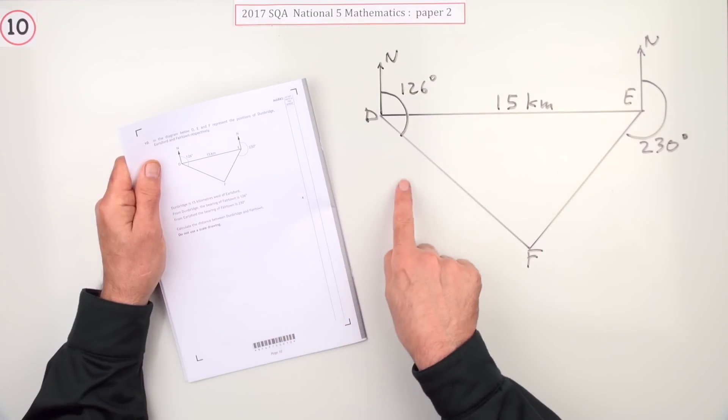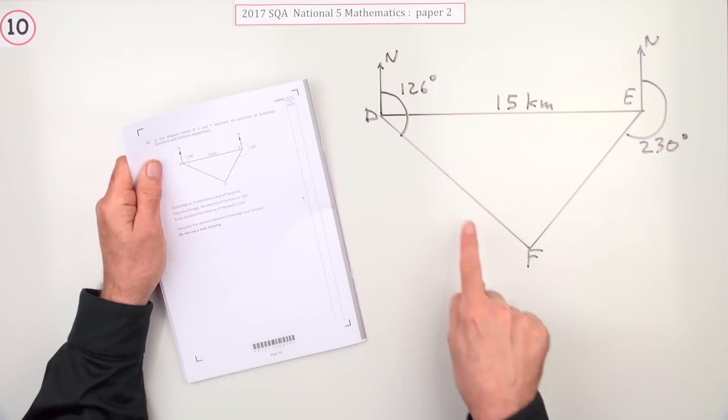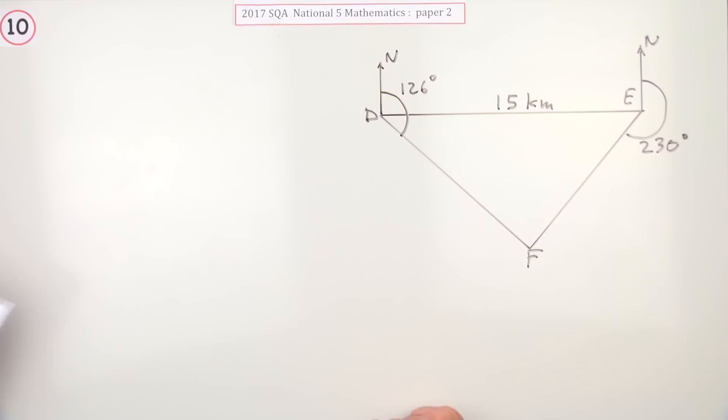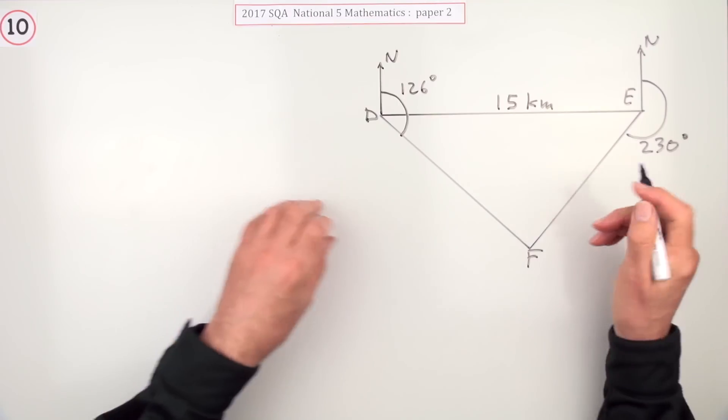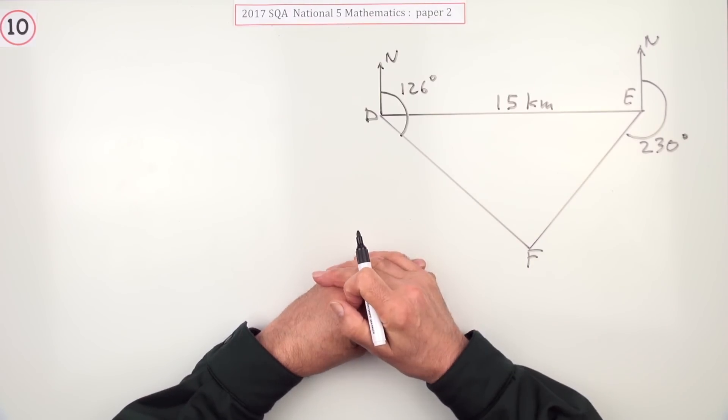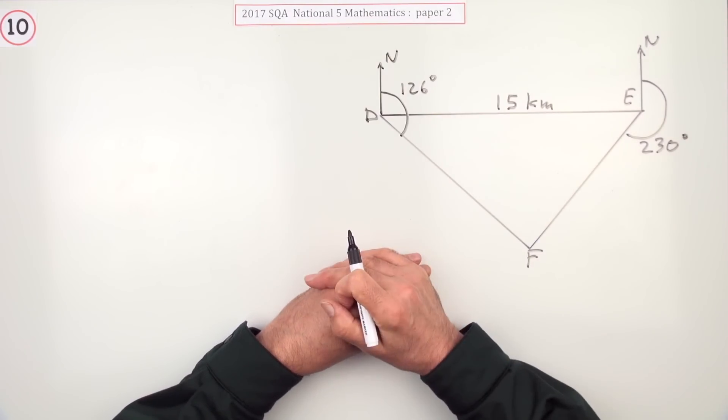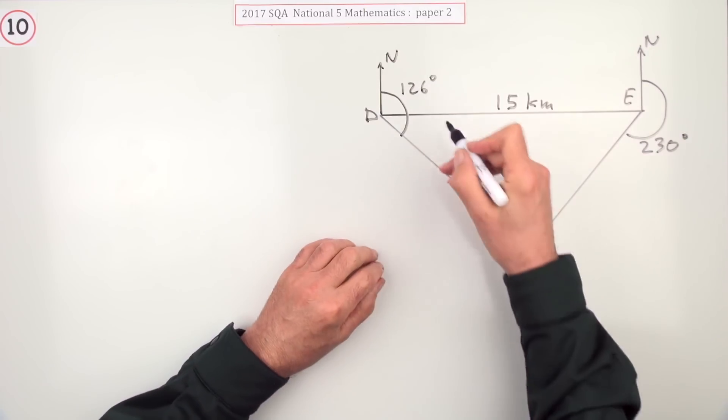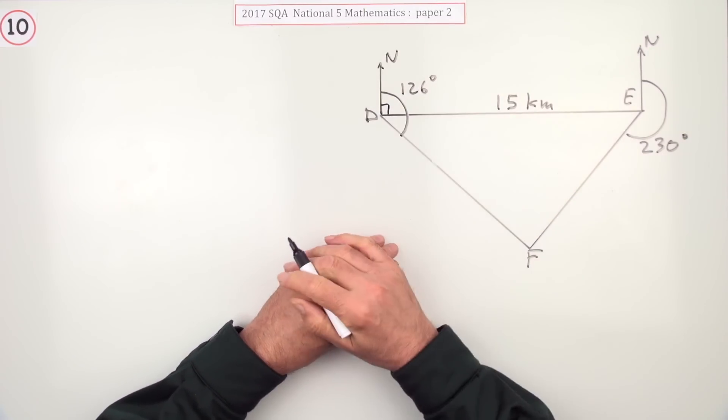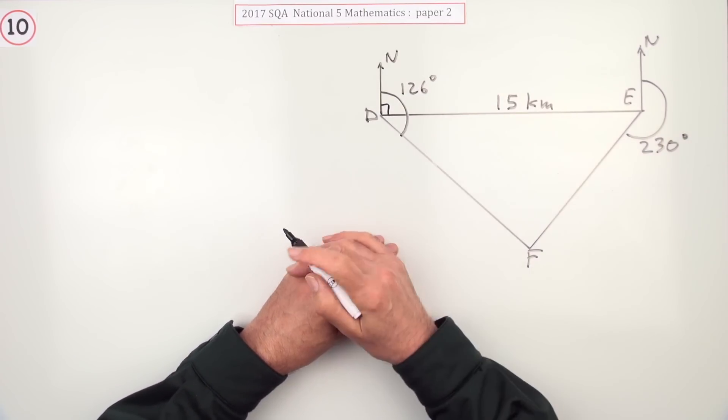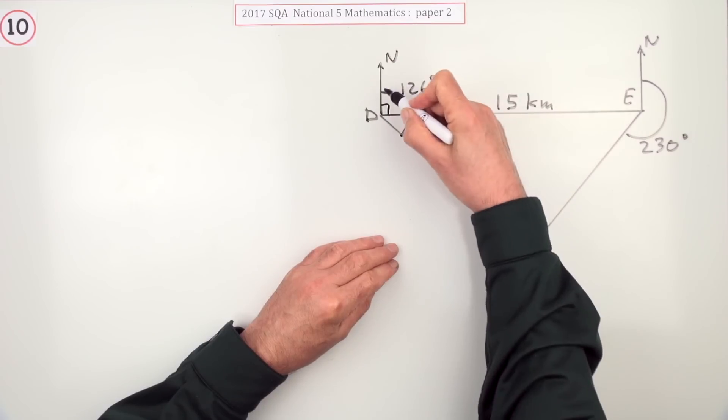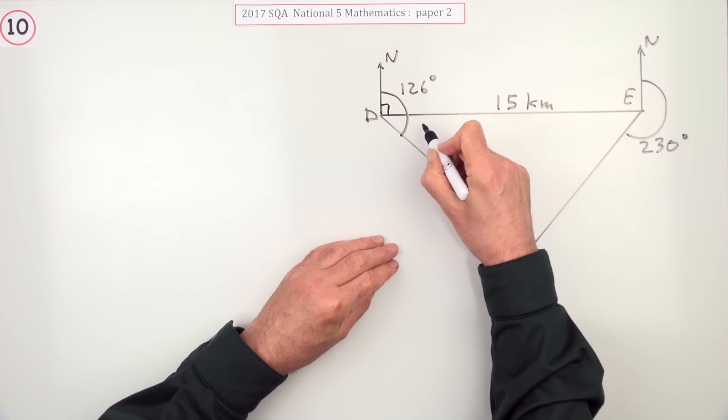This distance is 15. You have to work out the distance between D and F. Don't use a scale drawing. Well the first thing is let's get some information in the triangle. The triangle's only got one bit of information in it so far. But there's some angles hanging about outside. But because that's east, because that's north and east-west, that must be 90. So if it was 126 altogether, that means this angle in here is 36.